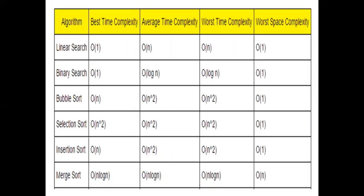First of all, we will cover: linear search, binary search, bubble sort, selection sort, insertion sort, and merge sort. For each, we will look at: what is the best time complexity, what is the average time complexity, what is the worst time complexity, and what is the worst space complexity.